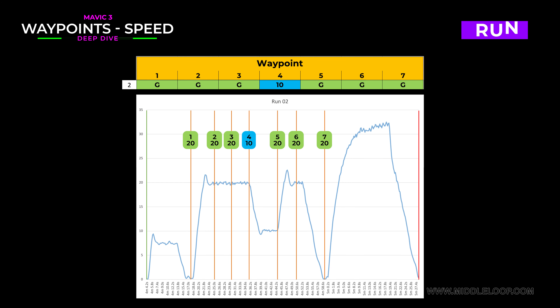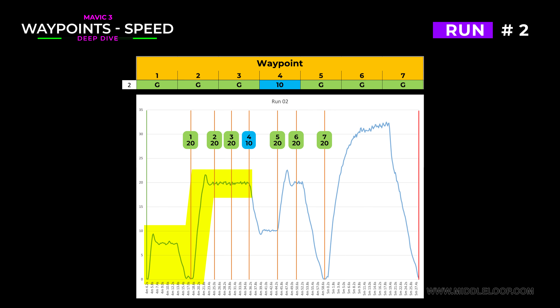Let's move on to the second run. Here we have all of the waypoints set to the global speed except number 4, which is set to 10 miles per hour. As you can see, it starts out pretty much the same right through that number 4 waypoint. The speed doesn't change until after it passes the waypoint set to 10 miles per hour, and then it doesn't return to 20 miles per hour until it passes the next waypoint.